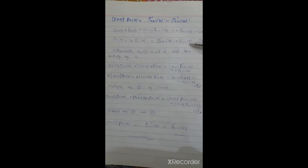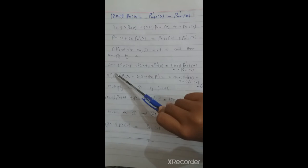To prove the third recurrence relation, we use the previous two relations. We differentiate Equation 1 with respect to x, then multiply by 2, and multiply Equation 2 by (2n+1). Differentiating Equation 1 with respect to x gives: (2n+1)·Pn(x) plus (2n+1)·x·P'n(x) is equal to (n+1)·P'n₊₁(x) plus n·P'n₋₁(x).